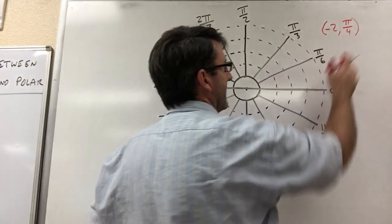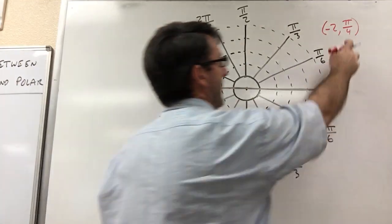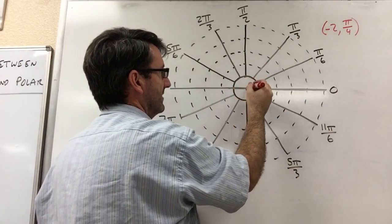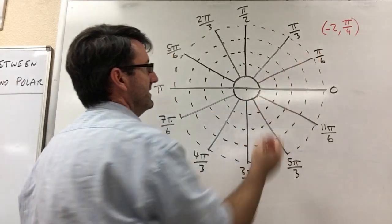So the first thing I like to do when I'm plotting polar coordinates is to look at the angle. So it's pi over 4, that angle is going out this way,